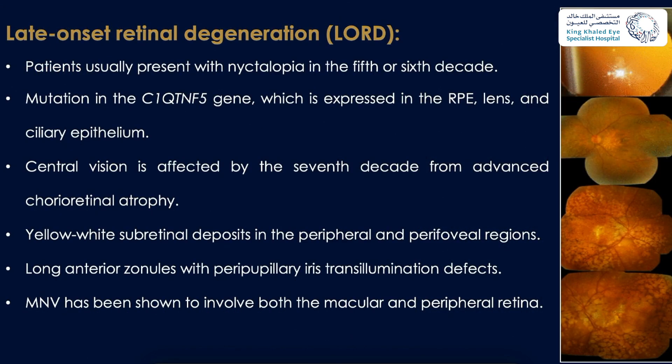Late-onset retinal degeneration: patients usually present with nyctalopia in the fifth or sixth decade, caused by mutation in the C1QTNF5 gene expressed in the RPE, lens, and ciliary epithelia. Central vision is affected by the seventh decade from advanced chorioretinal atrophy. The fundus shows yellow-white subretinal deposits in the peripheral and perifoveal region. Patients may have long anterior zonules with peripupillary iris transillumination defects. Macular neovascularization involves both the macular and peripheral retina.